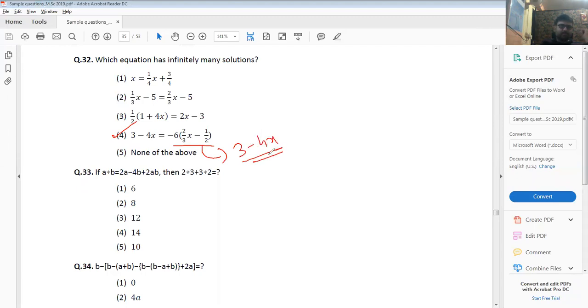If A operation B is equal to 2A minus 4B plus 2AB, then 2 operation 3 plus 3 operation 2, just find it out on your own. You'll get something to be 14.